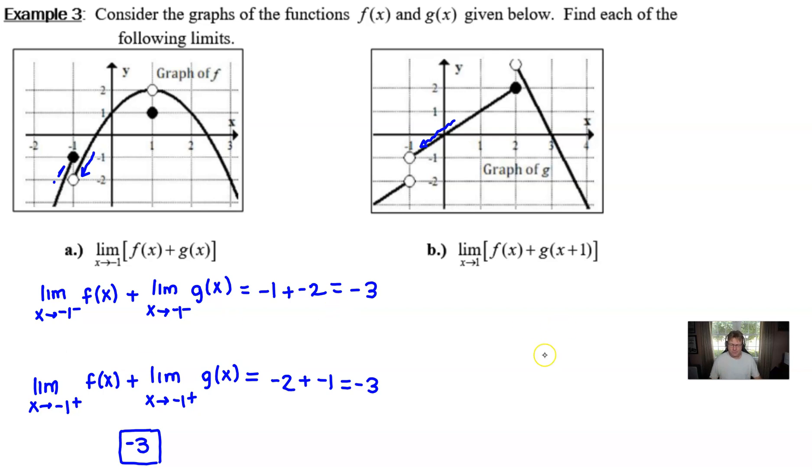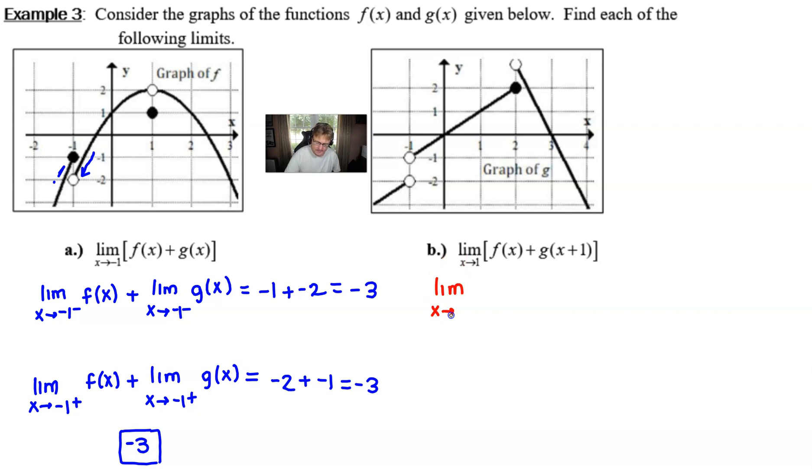All right, let's take a look at part B here. In part B, we see that we're going to find another sum of two functions. This time we've got the limit as x approaches 1 of f(x) plus the limit as x approaches 1 of g(x+1). So what we've got now is a more complicated function.